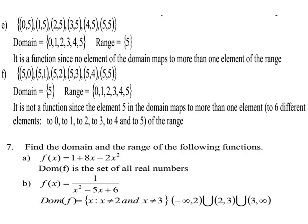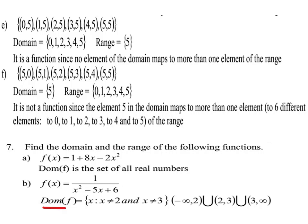Question number seven: find the domain and range of the following functions. (a) f(x) = 1 + 8x − 2x². Since this is a polynomial function, the domain is all real numbers. (b) f(x) = 1 / (x² − 5x + 6). The domain is the set of x such that x ≠ 2 and x ≠ 3, or equivalently (−∞, 2) ∪ (2, 3) ∪ (3, ∞).